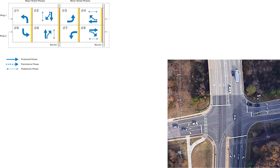Now we need to take those traffic volumes and apply them to the likely signalization of this intersection to estimate how it is performing relative to capacity. We're going to assume this is an eight-phase signal, which is a common assumption for this type of intersection where exclusive left-turn lanes each have their own phase. We'll see this in action as we move through the example and look at the volumes.